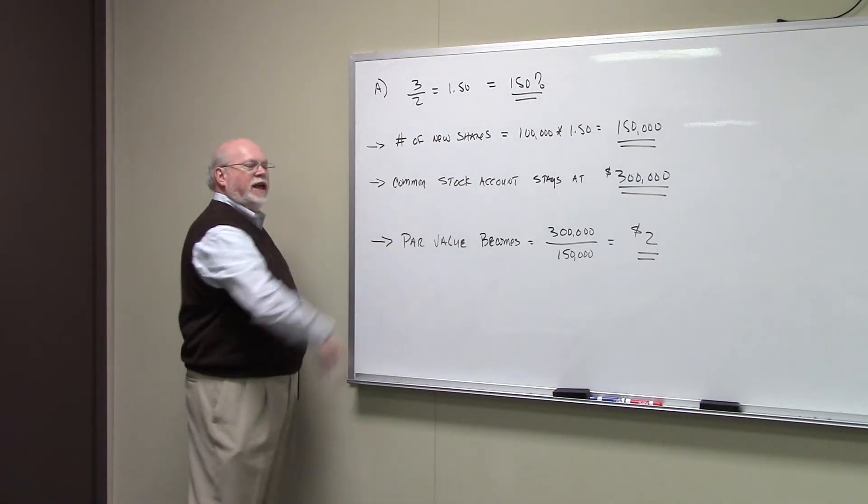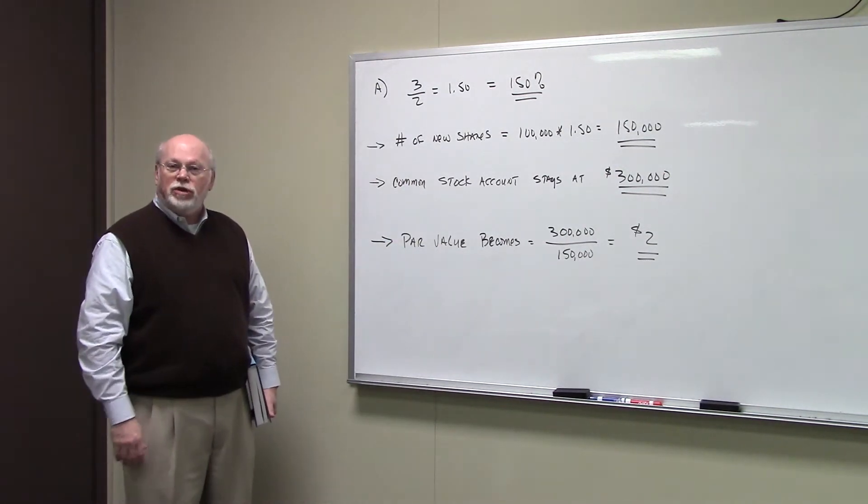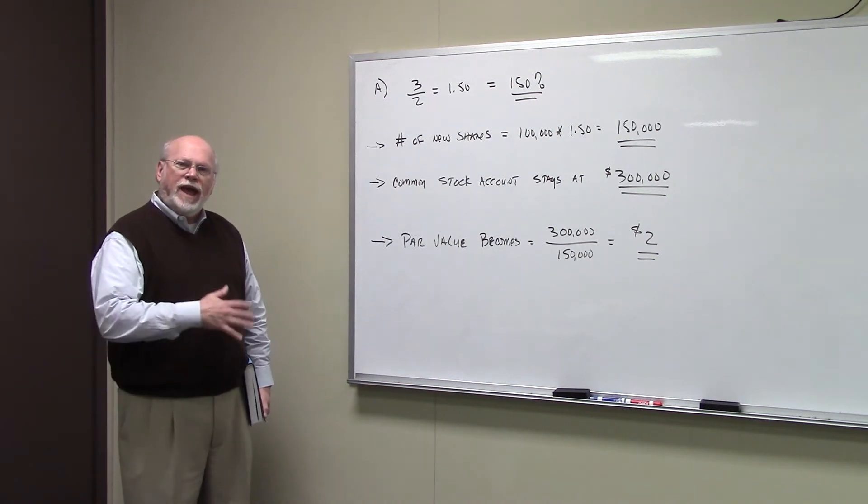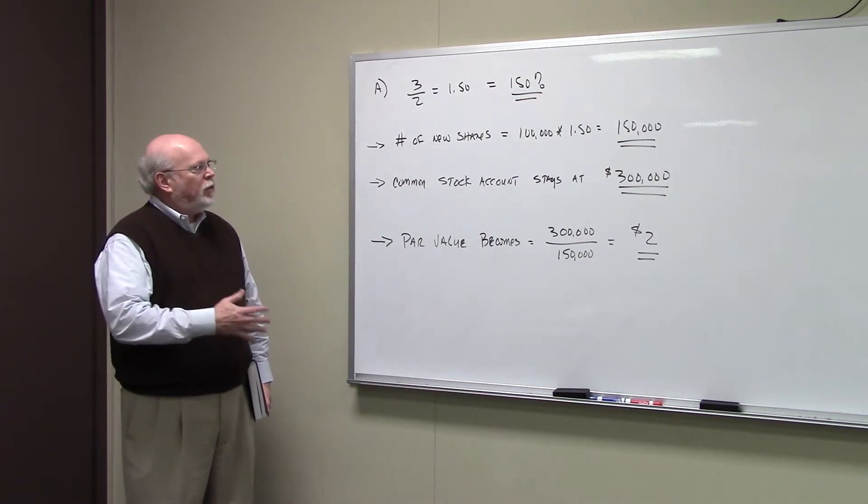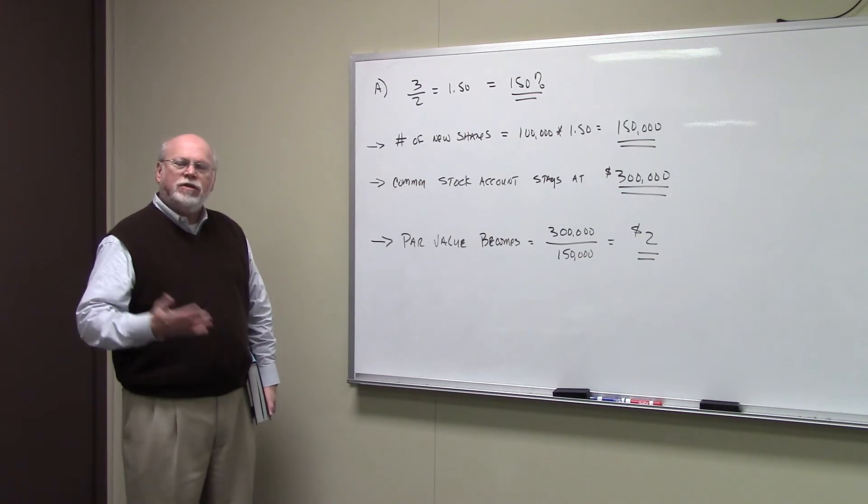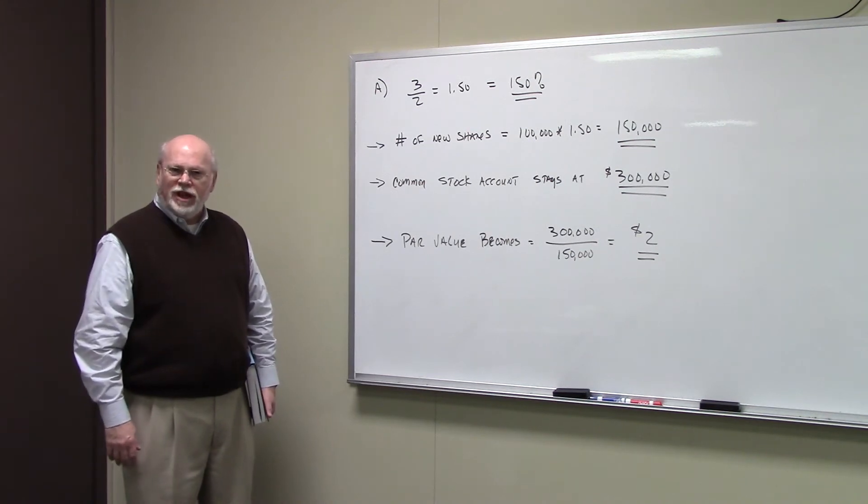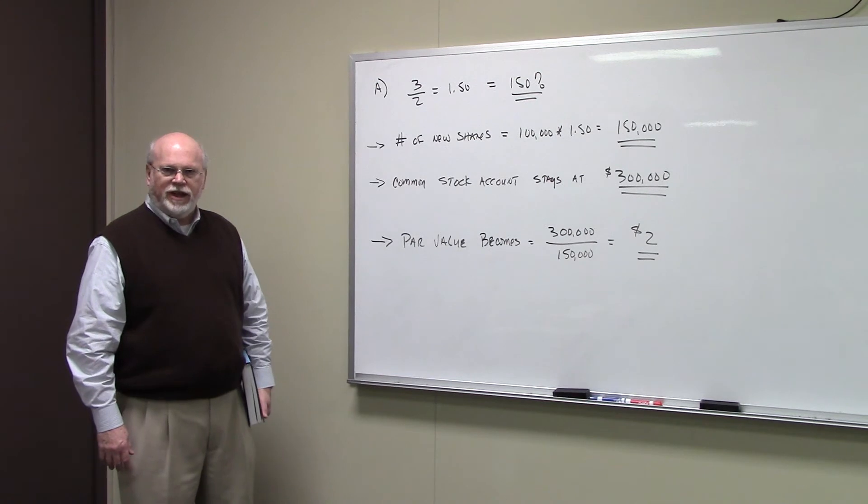And indeed, one question is, what's going to be the new number of shares outstanding? Well, they had 100,000 shares. Multiply that by 1.5, you find that after the stock split, they're going to have 150,000 shares outstanding.